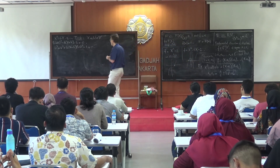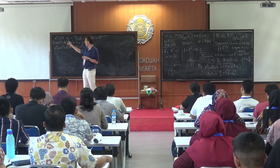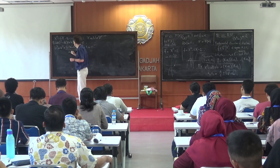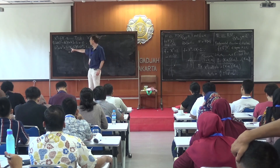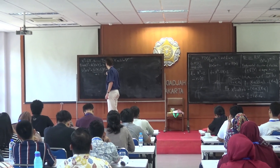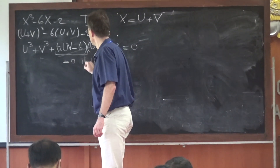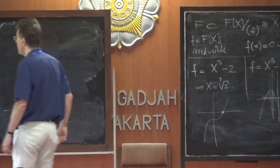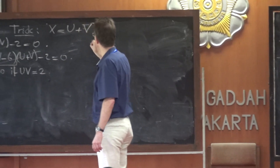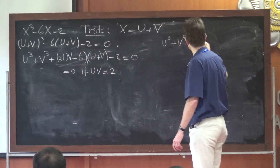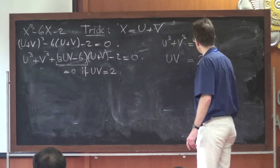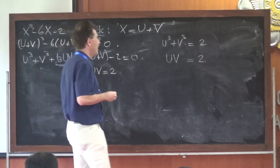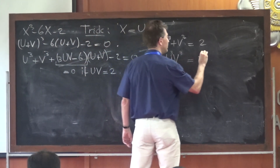So the equation becomes u cubed plus v cubed plus 3uv(u+v) minus 6(u+v) minus 2 equals 0. Now you have two variables, but you kill the middle part by setting 3uv minus 6 equal to 0, so uv equals 2. Now v is just 2 over u — you're back to one variable. The remaining equation is u cubed plus v cubed equals 2. And since uv equals 2, cubing gives u cubed times v cubed equals 8.